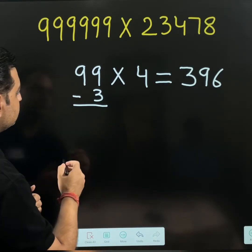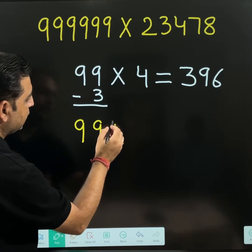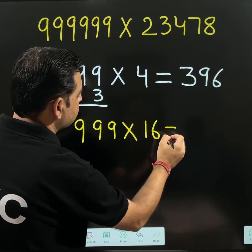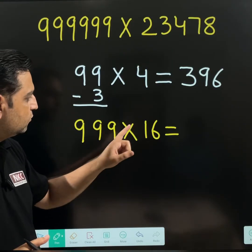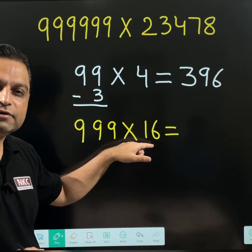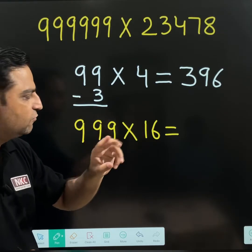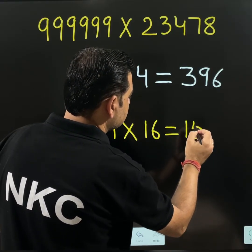We are going to follow the same concept. Let's suppose you have 999 and you want to multiply it with 16. Now the number is 16. Take 1 lesser than 16. If you subtract 1 from 16, you are going to get 15. So I am writing here.